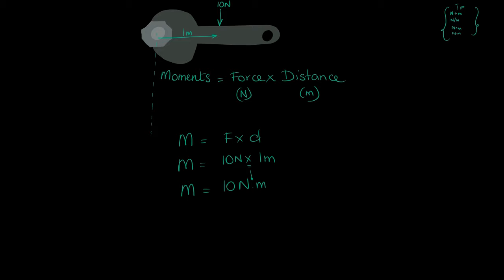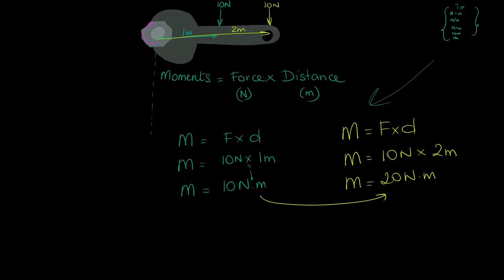However, if that same force is now applied 2 meters away instead of 1, the moment increases to 20 Newton meters. So the further away from a pivot a force is applied, the higher the moment.